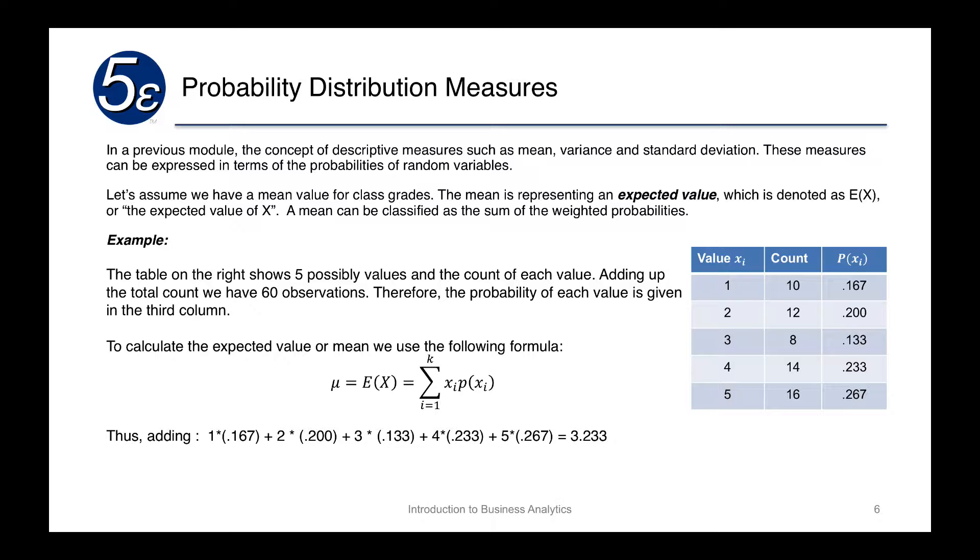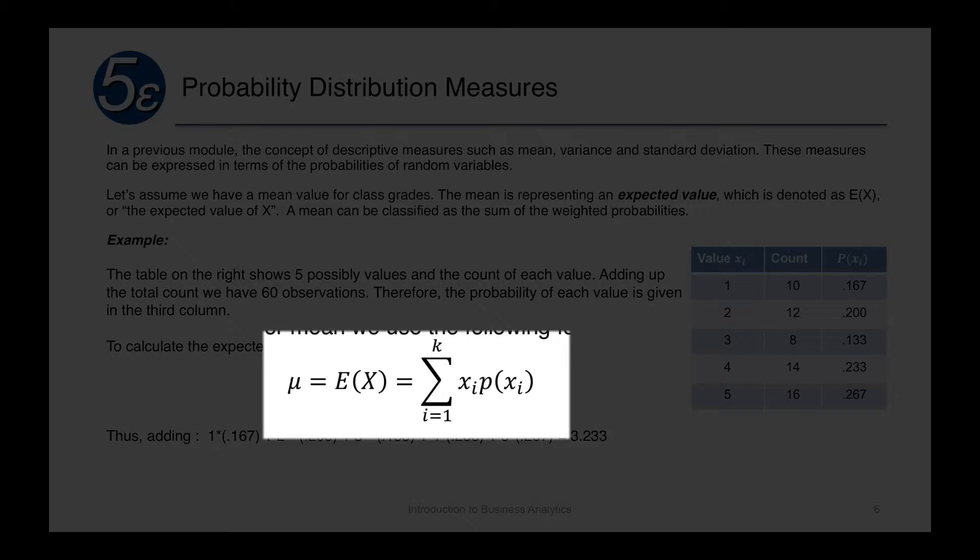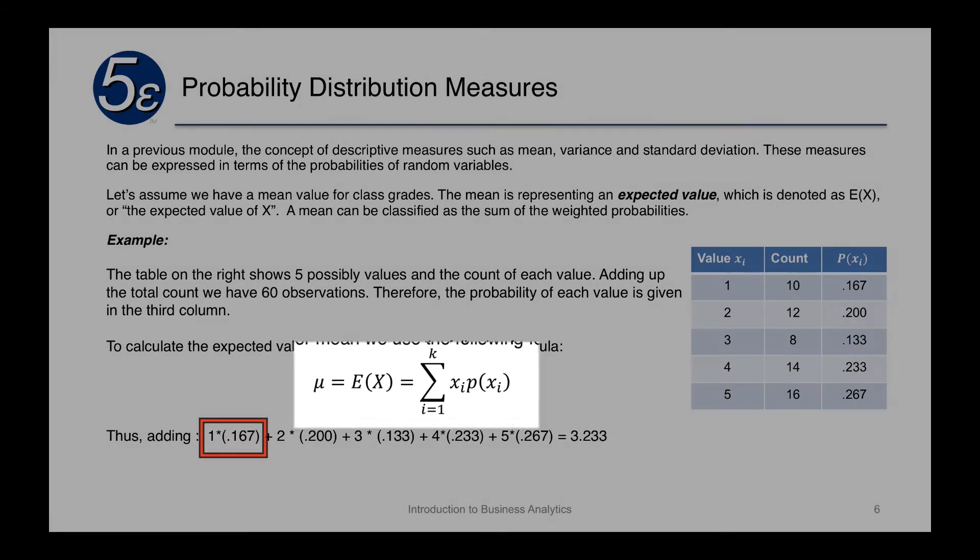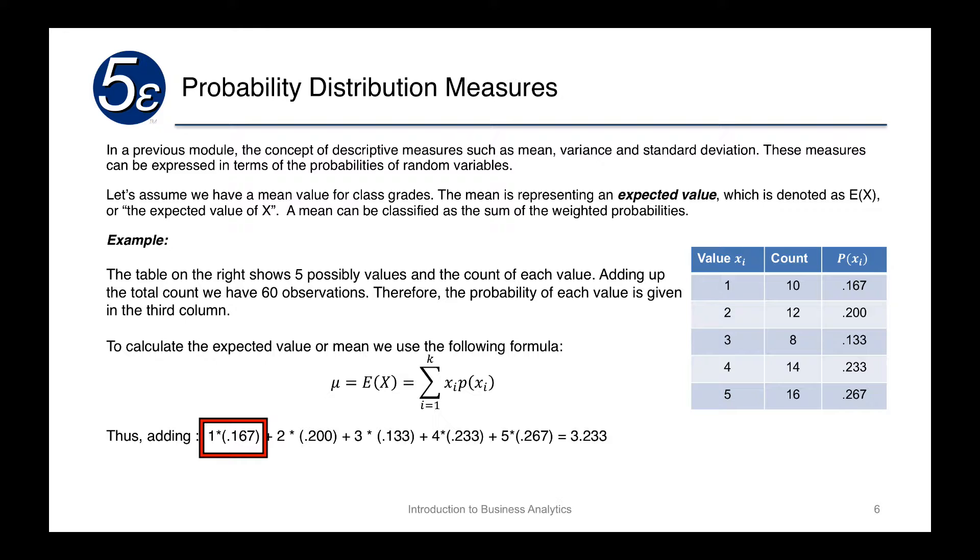To calculate the expected value or mean, we use the following formula: μ equals the expected value of x, which equals the sum of each individual xi times its own probability. So if the value of xi is 1, we multiply it by the probability of having a 1, which is 0.167. If the x value is 2, we'll multiply that by the probability of xi, which is 0.20. Then we'll have 3 times 0.133, 4 times 0.233, 5 times 0.267. We add them up and we will get a mean value of 3.233.